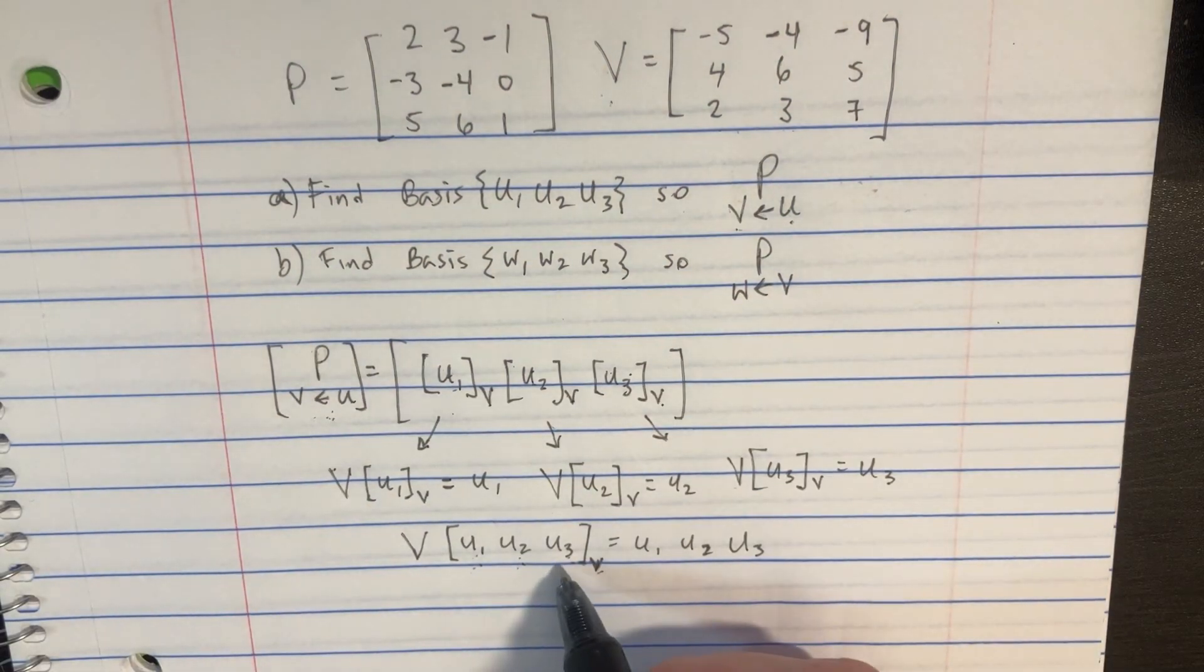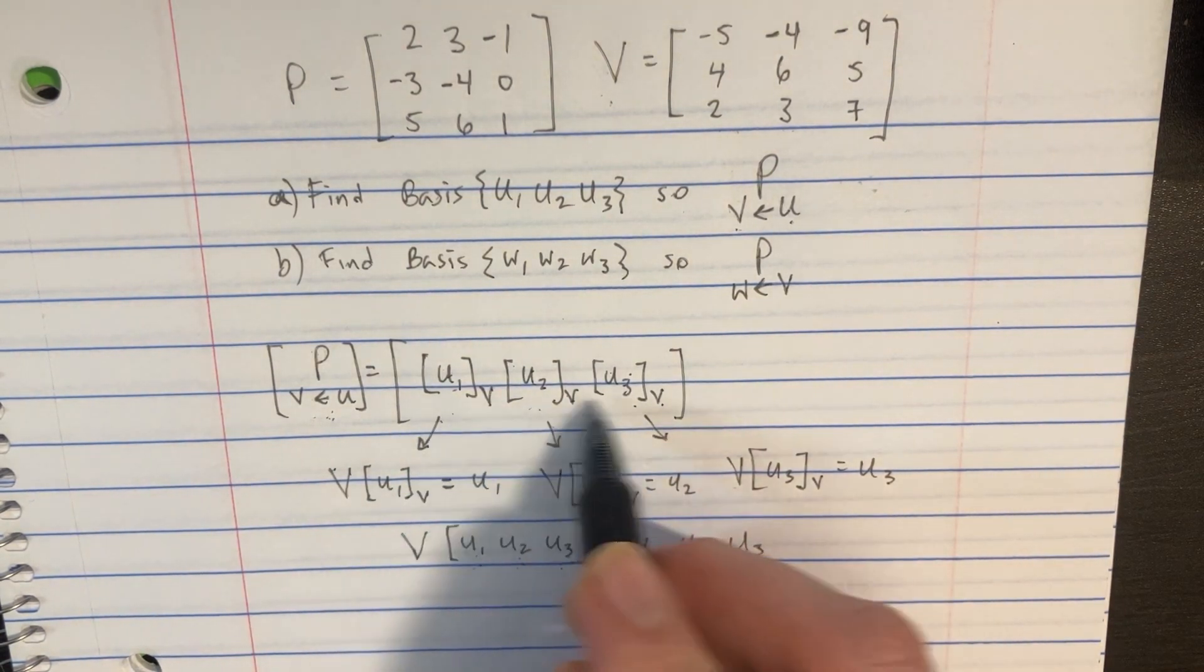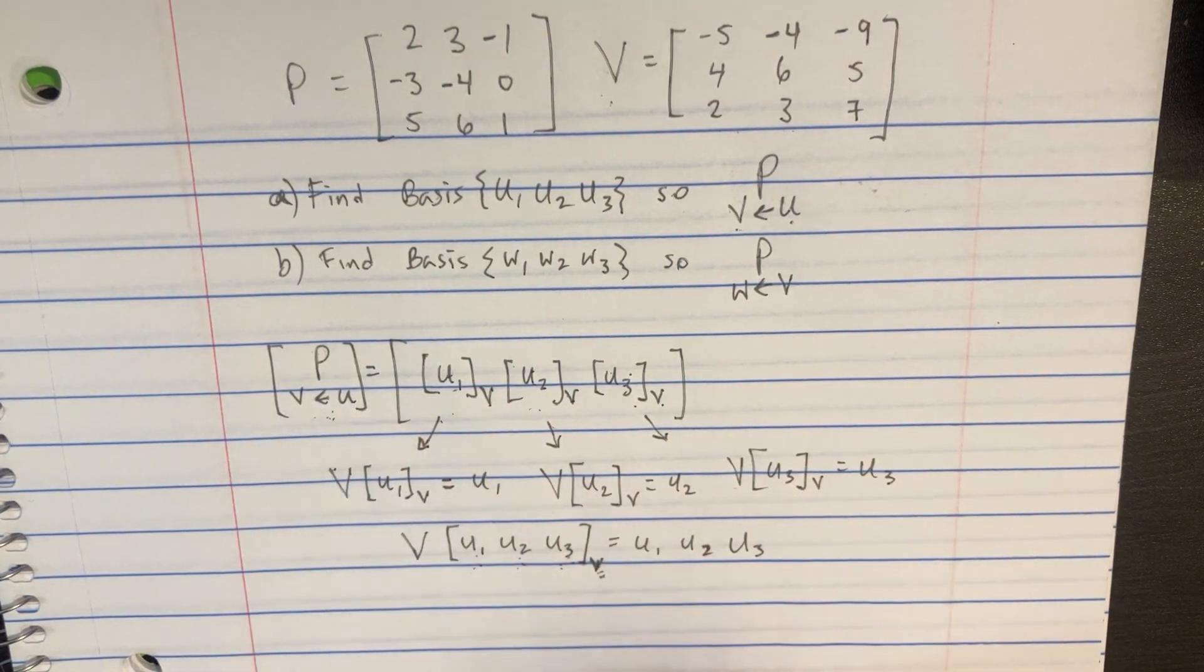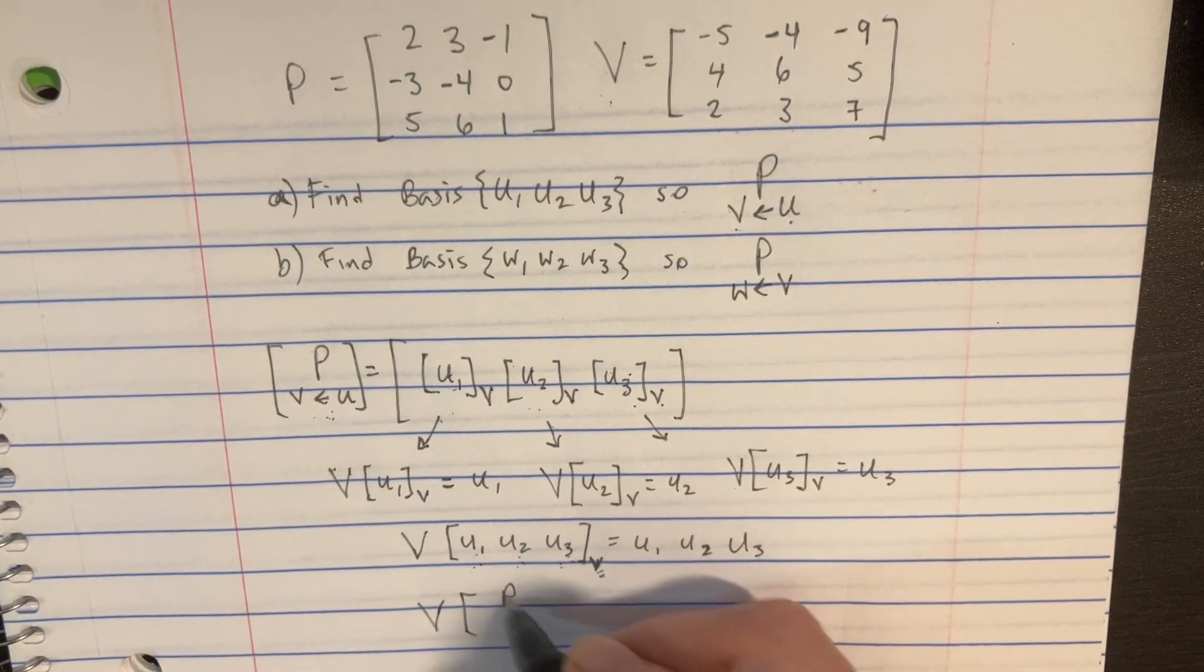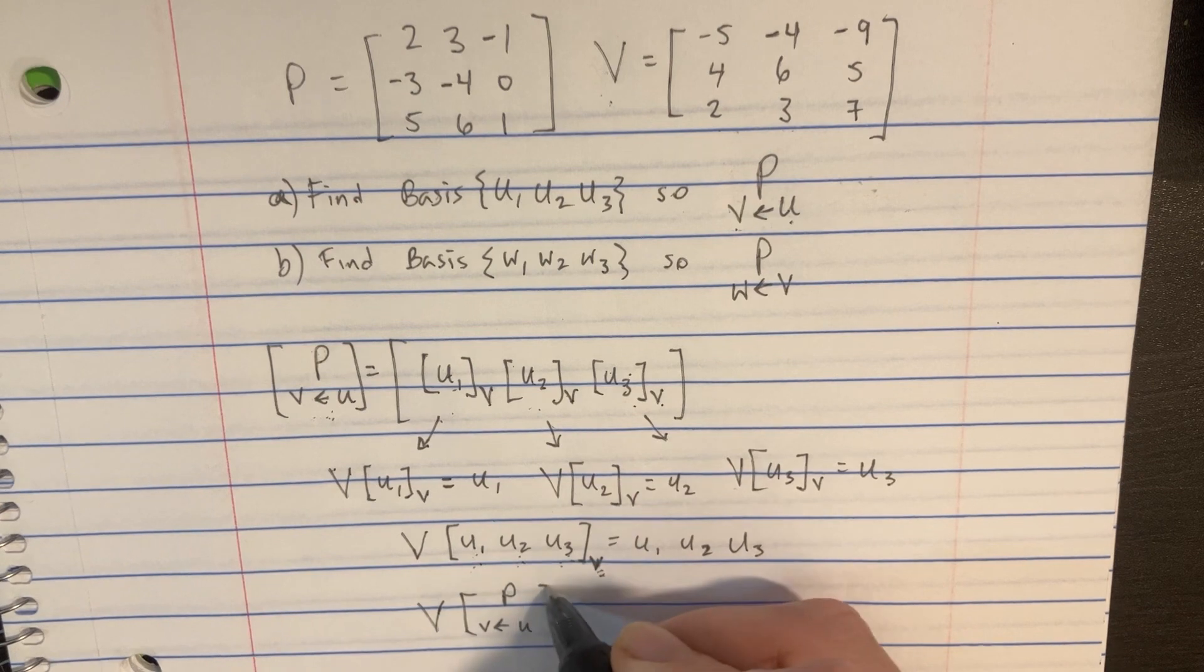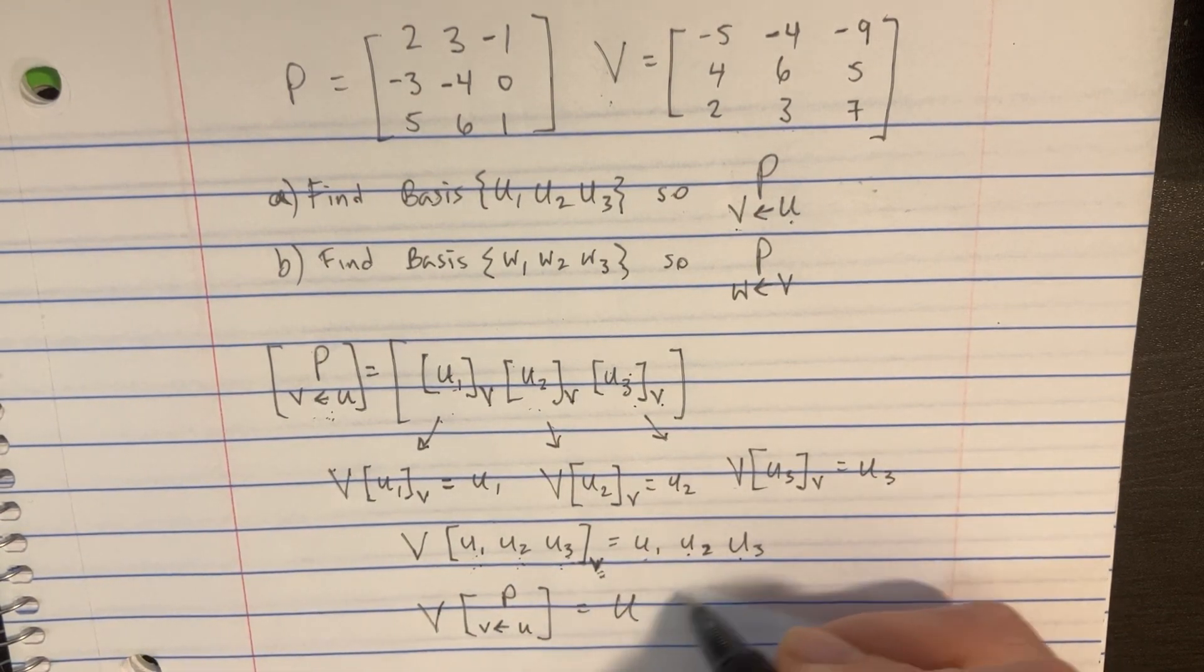But what is this U1, U2, U3 sub V really equal to? Well, it's actually equal to this P, U going to V matrix. So we should rewrite this as V times P, U going to V. And then that'll just be equal to this U1, or this U matrix.